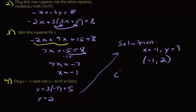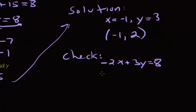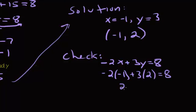As I said, you want to check your answers. What were the original two equations? Negative 2x plus 3y equals 8. That was one of them. Let's see if it works. Negative 2 times negative 1 plus 3 times 2 equals 8. So that's 2 plus 6 equals 8. That checks out.